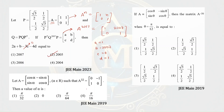Here again you can see it is the same form. A to the power 32 will be A of 32 alpha. We can say cos of 32 alpha equals 0, which means 32 alpha equals pi by 2, so alpha equals pi over 64. Option 3 is the correct answer.